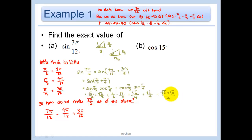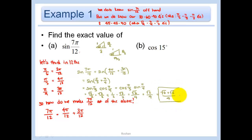Note that √6 and √2 are not like terms — you cannot combine radicals that are not the same. So (√6 + √2)/4 is the final answer.